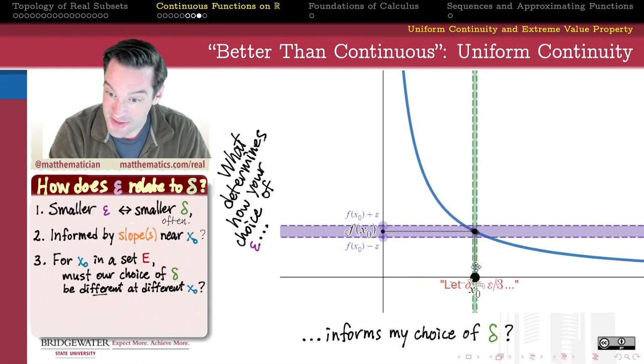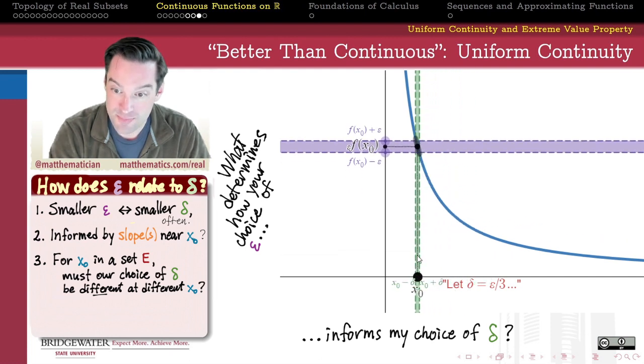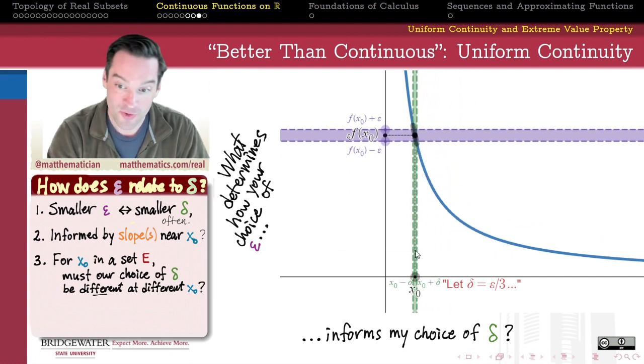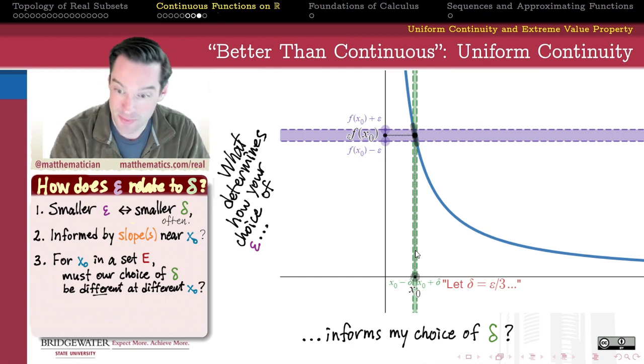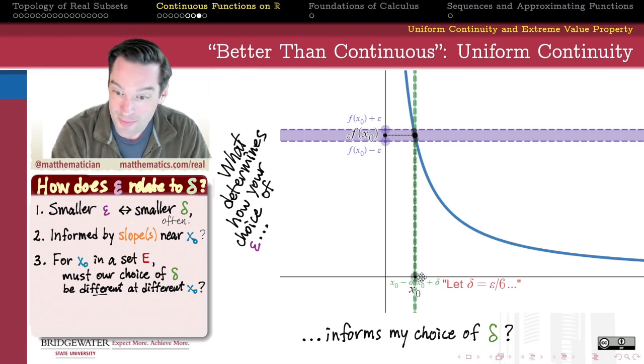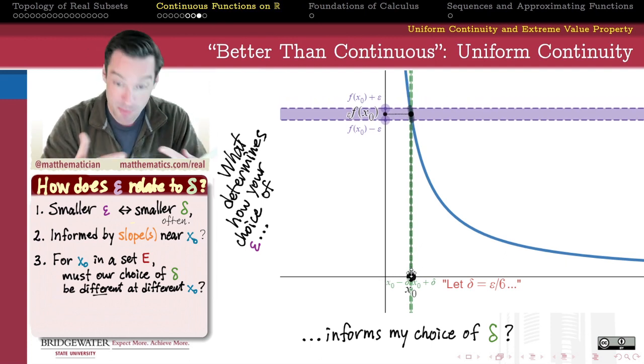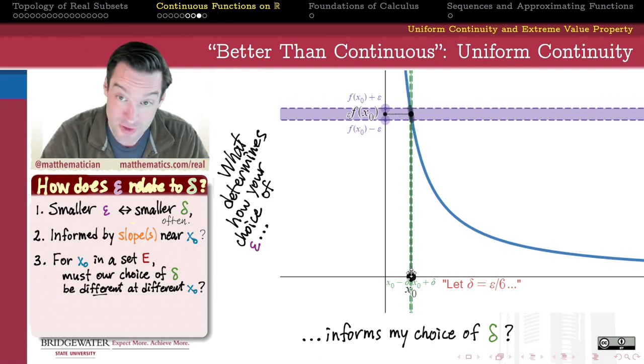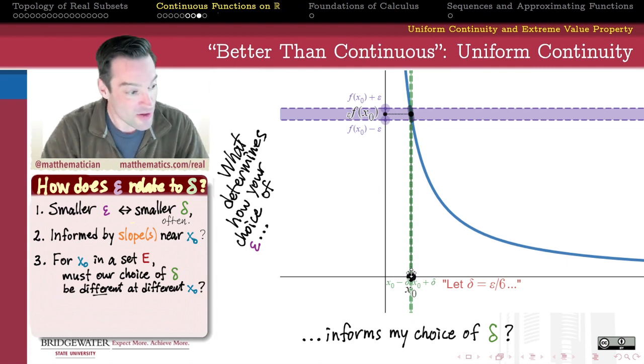That the deltas that might work at some places in my domain end up sort of not working so well once we wander a little bit closer to that vertical asymptote for my reciprocal function. And so then we might say, well, let's just shrink our delta a little bit further, maybe epsilon over 6. But then, as we keep trying that, it looks like no matter what choice that we make, it eventually is going to break out of that vertical epsilon strip, even if I make delta very small indeed.